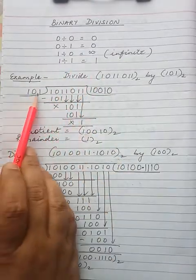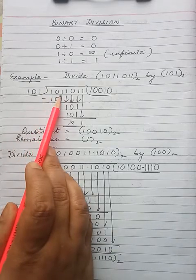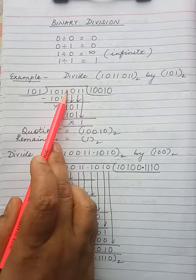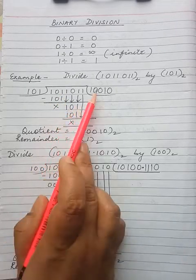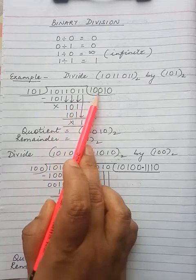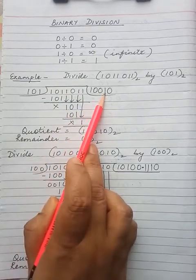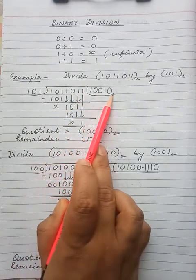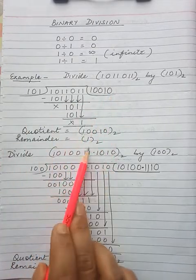Now divide this number by 101. Since there are 3 digits in the divisor, we will take 3 digits together. 1 times 101 — write 1 in the quotient. The next digit cannot be divided, so write 0. Another digit is copied — it cannot be divided, so write another 0. Another digit is copied — 101 divides once, so 1 is the quotient digit. The remaining cannot be divided, so 0 is the quotient digit. So the answer is: quotient is this and remainder is this.